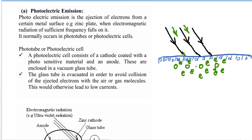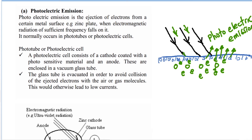When these electrons absorb this energy, and it is large enough to enable them to break free from their attraction to the nucleus, this is what we call photoelectric emission. In other words, photoelectric emission takes place when electrons in the metal surface receive energy high enough to escape from their nuclear attraction.